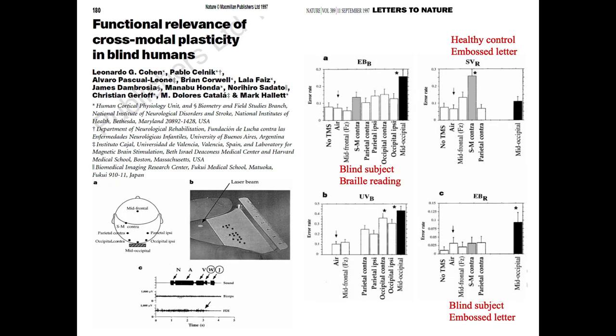TMS can also be given to non-motor cortical areas, and this can sometimes lead to very high-impact studies. In this nature experiment, TMS was given to different cortical areas. On the left side we can see the experimental setup. The authors compared the effect of TMS in very early blind subjects versus healthy controls. All subjects performed a braille reading task, shown on the left. At the beginning of the task, the subject moves their index finger to start reading; when the finger covers a laser beam, it triggers a TMS train at about 10 Hz for three seconds, which produces a virtual lesion in the stimulated area.